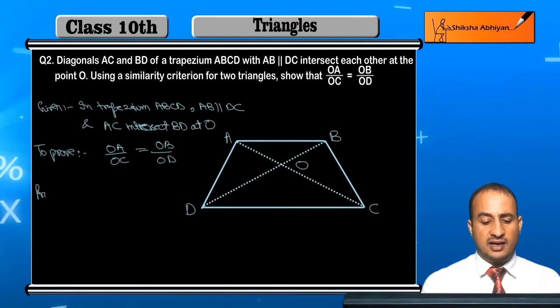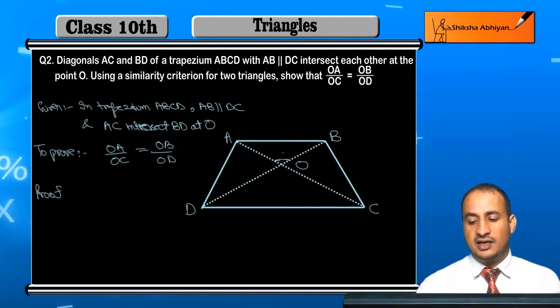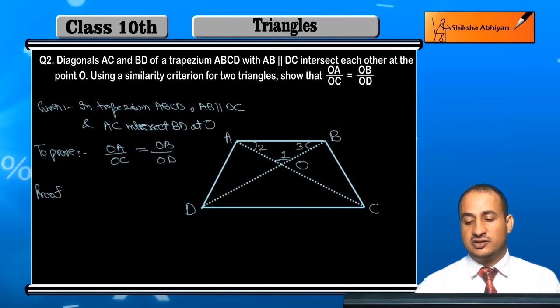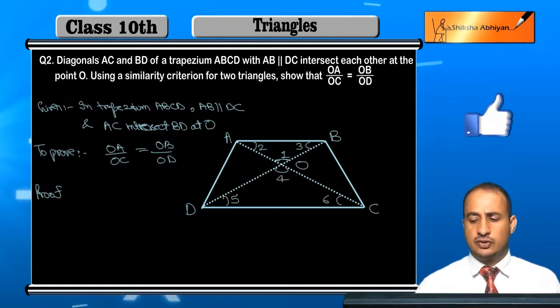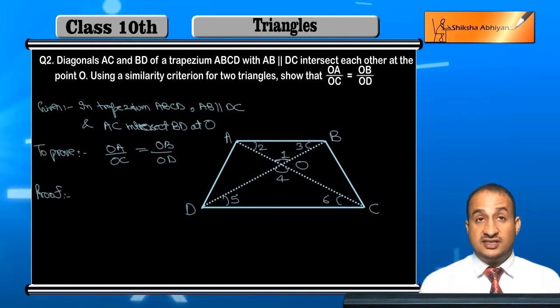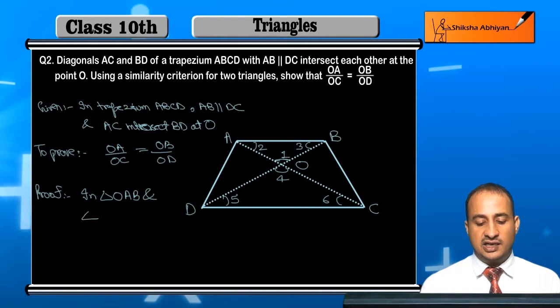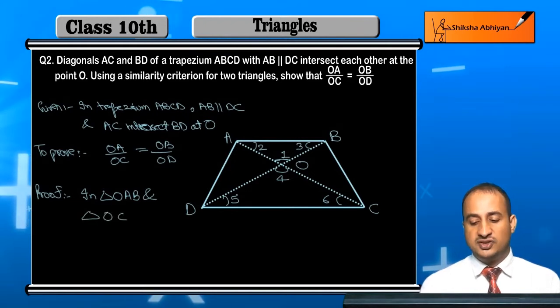Now see students, in the proof I will mark the angles. I will mark this angle 1, this angle 2, this angle 3, this angle 4, this angle 5, this angle 6. Now in triangles OAB and OCD.